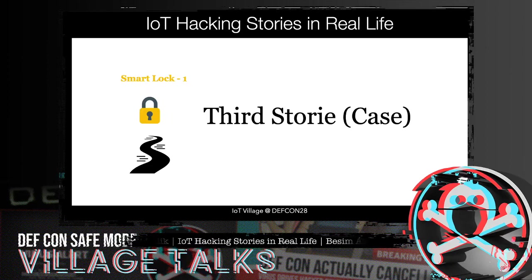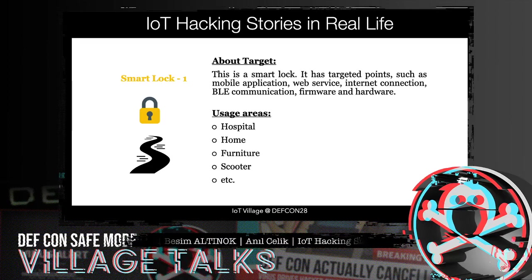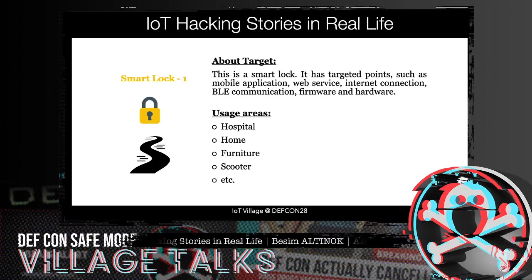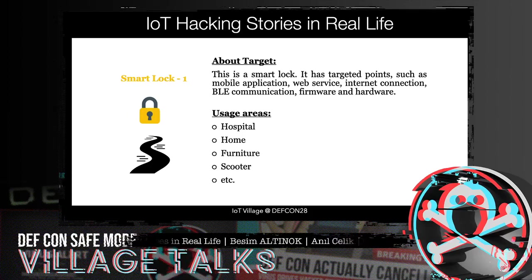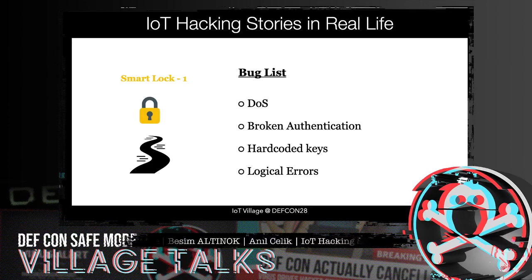The third story is about a smart lock. This smart lock has attack points such as the mobile application, web service, internet connection, Bluetooth Low Energy communication, firmware, and hardware — all of them are attack vectors for our research. This smart lock could be used in hospitals, homes, smart scooters, and other places.